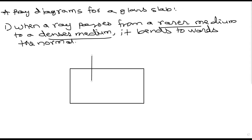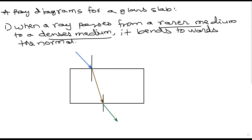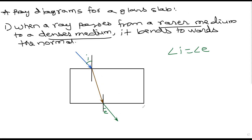Here we have a normal. This is the incident ray. This is the refracted ray — it bends towards the normal. This is the emergent ray. The emergent ray makes an angle e — angle of emergence. Angle i equals angle e. If you extend the incident and emergent rays, they are parallel.